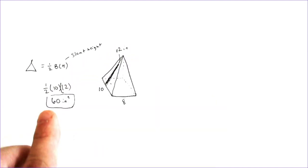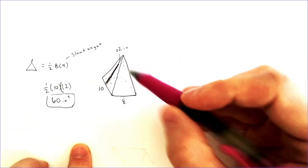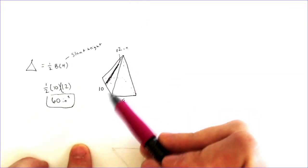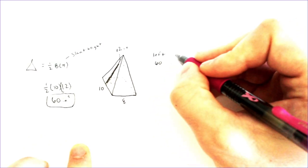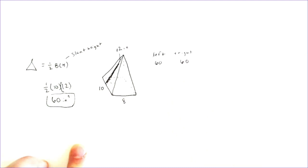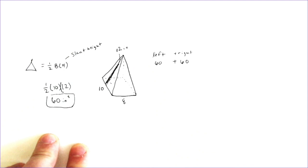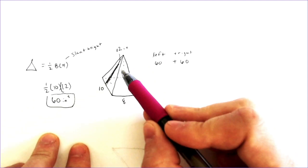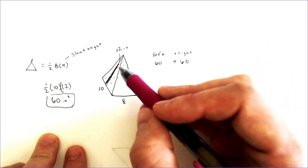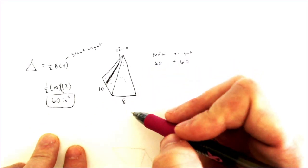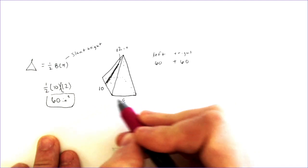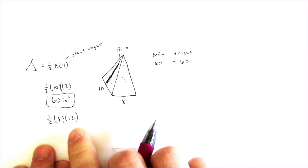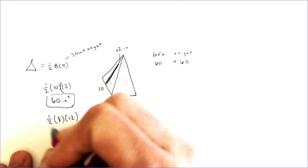That's just the area of the one triangle on the left side. We also have a duplicate of it on the right side, so the left triangle has sixty and the right triangle also has an area of sixty. We still have the front-facing triangle and the back triangle to deal with. The front triangle still has a slant height of twelve — that never changes. But the base is no longer ten, it's eight, and the height of the triangle is still twelve. We multiply those together: one-half times eight times twelve, and we'd get 48.